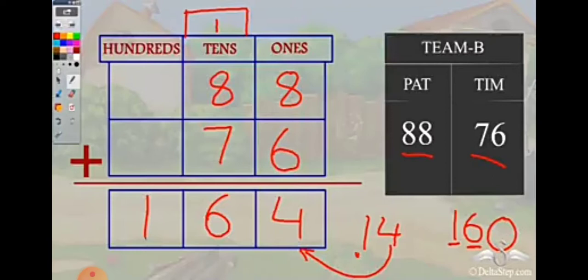So first we add 8 plus 6 to get 14. We write only 4 in the units place and carry 1 to the tens place. While adding the tens digits, we also add the carried 1: 8 plus 7 plus 1 equals 16. So we write 1, 6, 4 — the answer is 164.